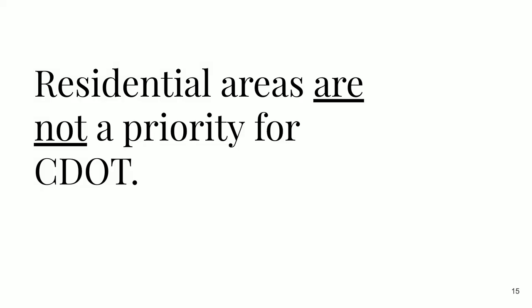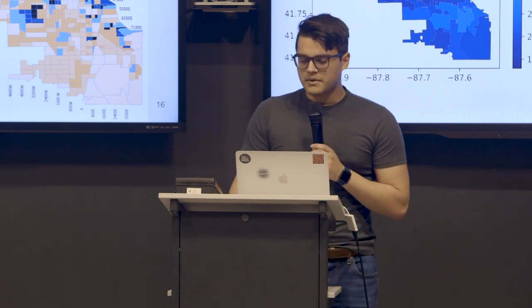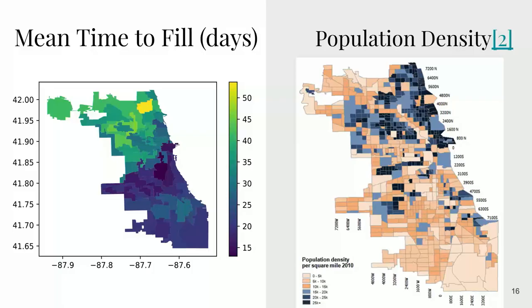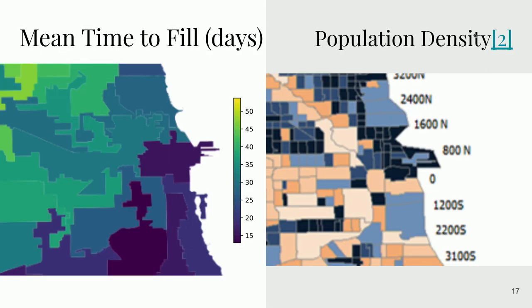The potholes nearest to the loop and those that get you to a highway have the highest priority, but potholes in back alleys behind your house aren't really a priority for CDOT. We wanted to find out which wards get their potholes filled the quickest. This is mean time to fill in days by ward — it's kind of a north side/south side issue. The more yellow the ward, the longer it takes. That yellow ward up here takes more than 55 days, while Ward 42, where we are right now, takes about two weeks despite having the largest concentration of population in Chicago.